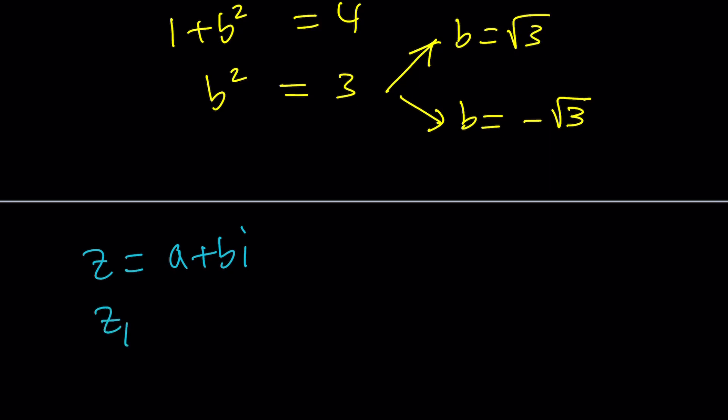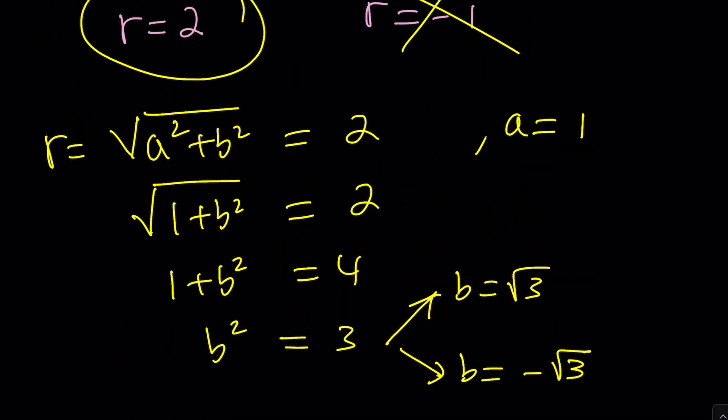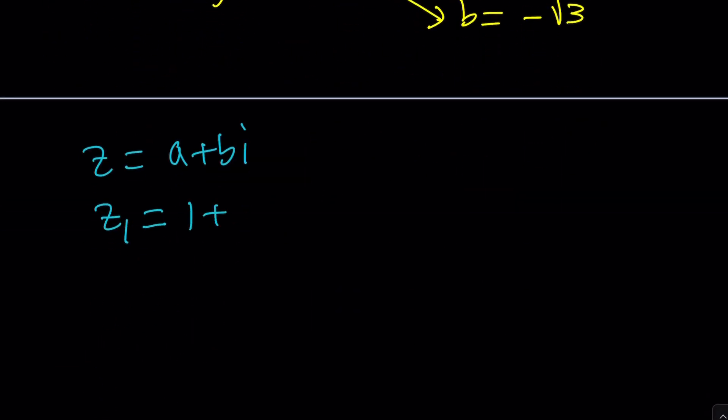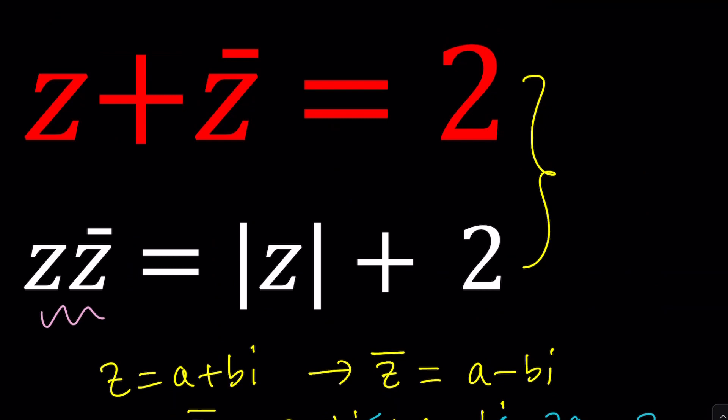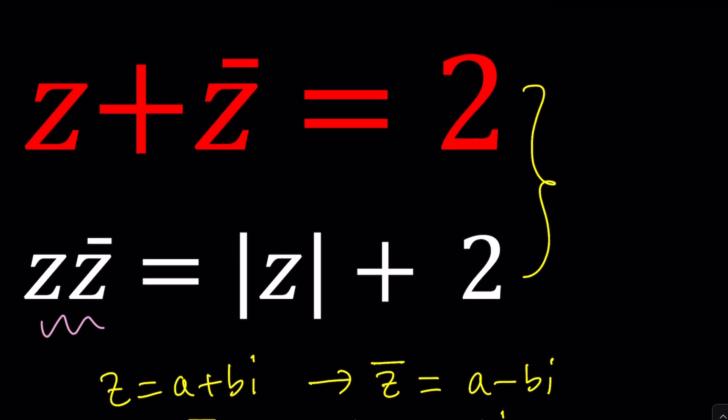Therefore z sub 1 can be written as 1 plus root 3 i. And z sub 2 can be written as 1 minus root 3 i. In other words, there are two complex numbers that satisfy this system. And you can definitely check those out easily. Let's go ahead and plug it in, for example.